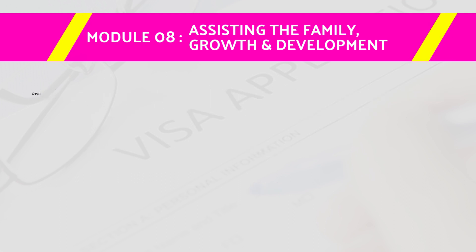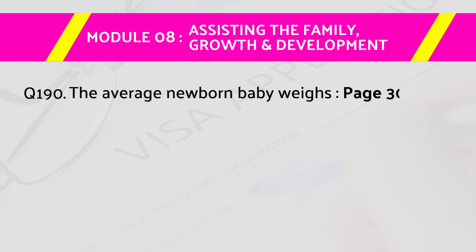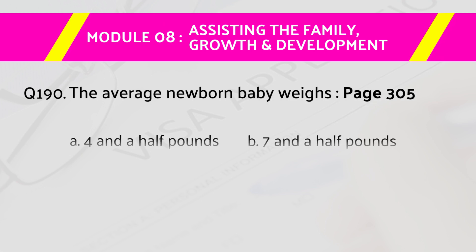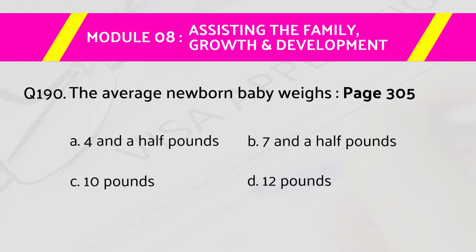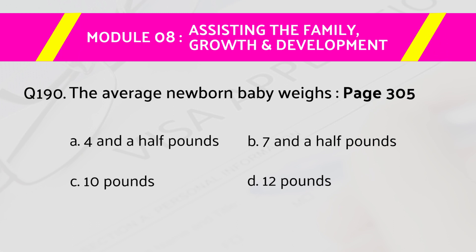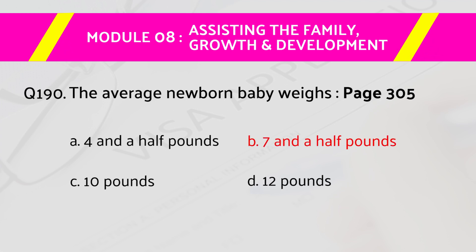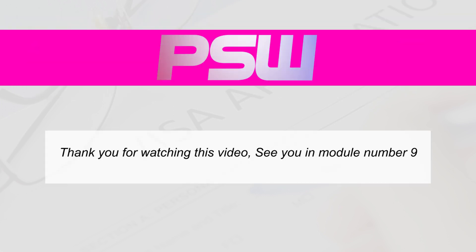Question number 190: The average newborn baby weighs — page number 305. Answers are: A) four and a half pounds, B) seven and a half pounds, C) 10 pounds, D) 12 pounds. The right answer is B, seven and a half pounds. Thank you for watching this video — see you in module number nine.